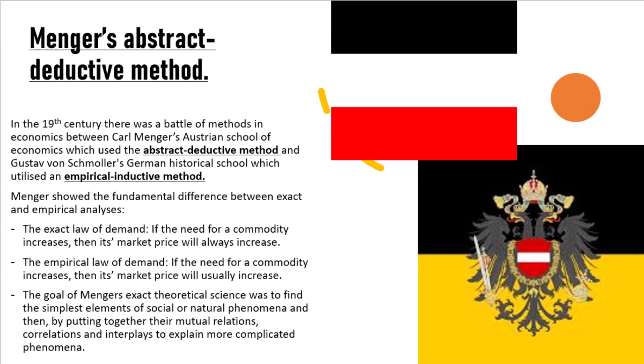The goal of Menger's exact theoretical science was to find the simple elements of social or natural phenomena, and then by putting together their mutual relations, correlations and interplays, using these to explain more complicated phenomena. Menger used his observations, collated them together in his models, and then used math to predict the future based on past events and observations in the field of economics — kind of like the stuff covered in a statistics course.